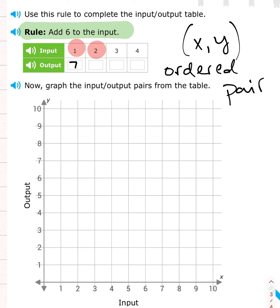All right. What is 2 plus 6? That would be 8. 3 plus 6, 9. 4 plus 6, 10. All right. Those are our points. Our table is done.